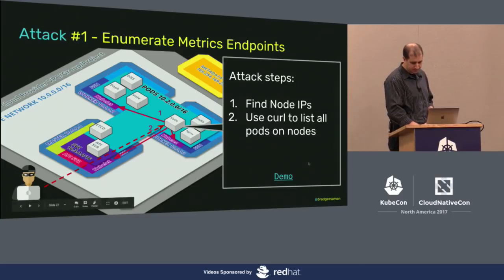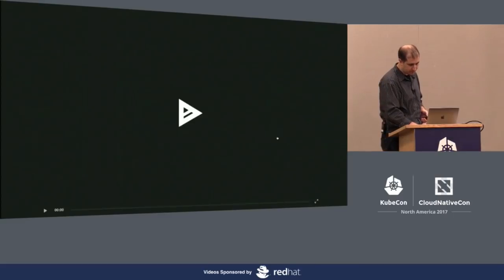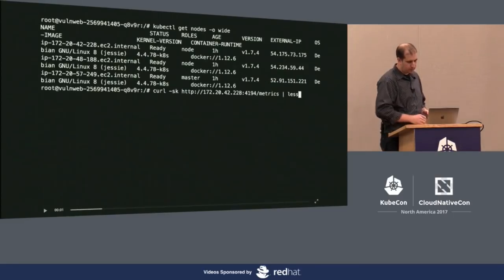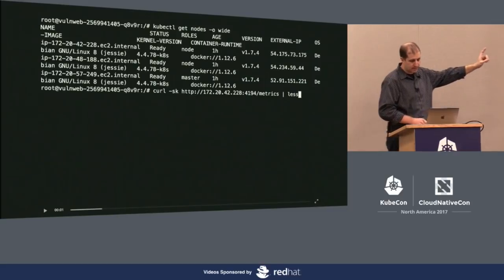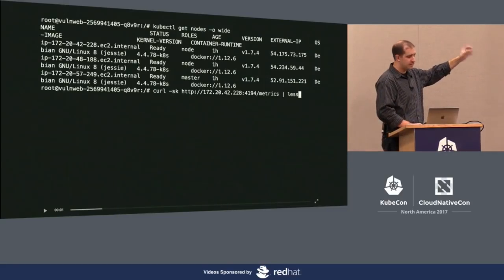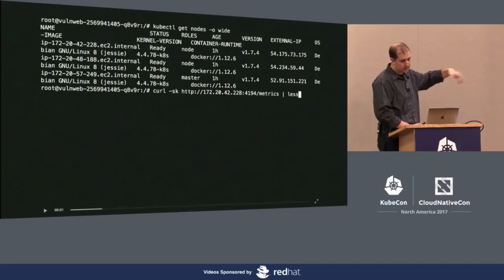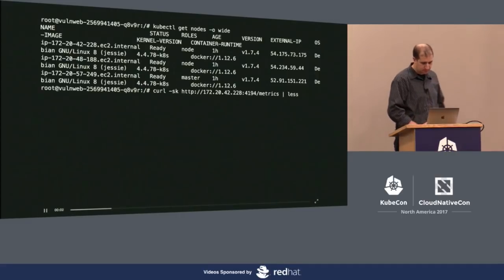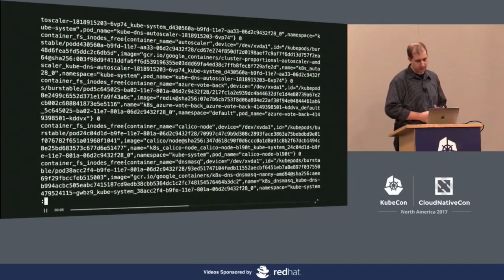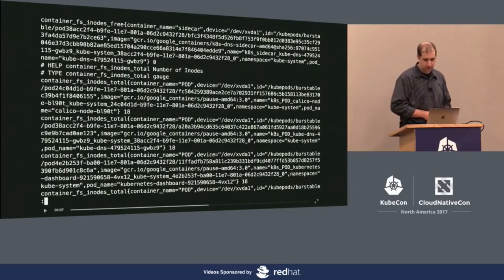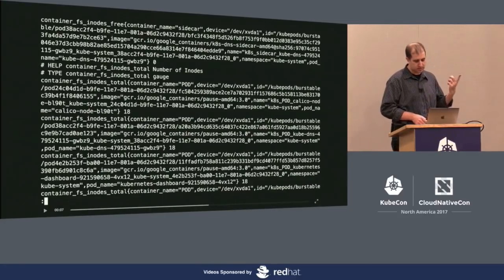In my first demo: because we have kubectl access, we can list nodes and see the IP address of one. cAdvisor runs on port 4194 and we can hit the metrics endpoint. cAdvisor will happily tell you everything about what's running on the system, including pod names, which are always randomized, the namespace they're in, container names, versions, SHA hashes — basically everything that's running.